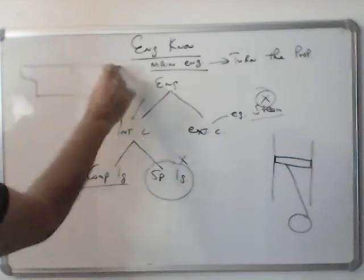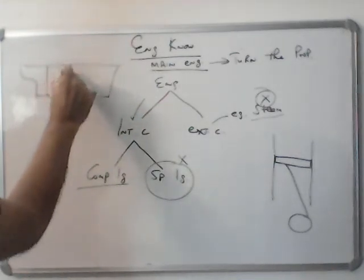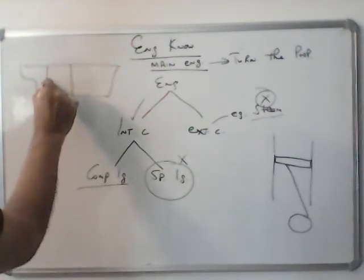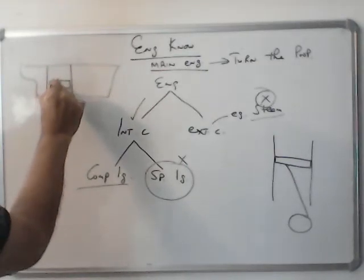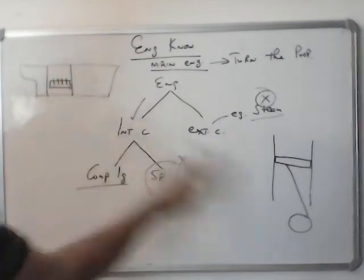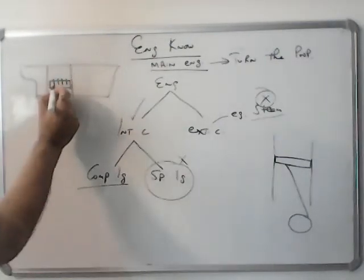And if you see the engine room here, this is the main engine. So these are the cylinders, four or five cylinders connected to the crankshaft.